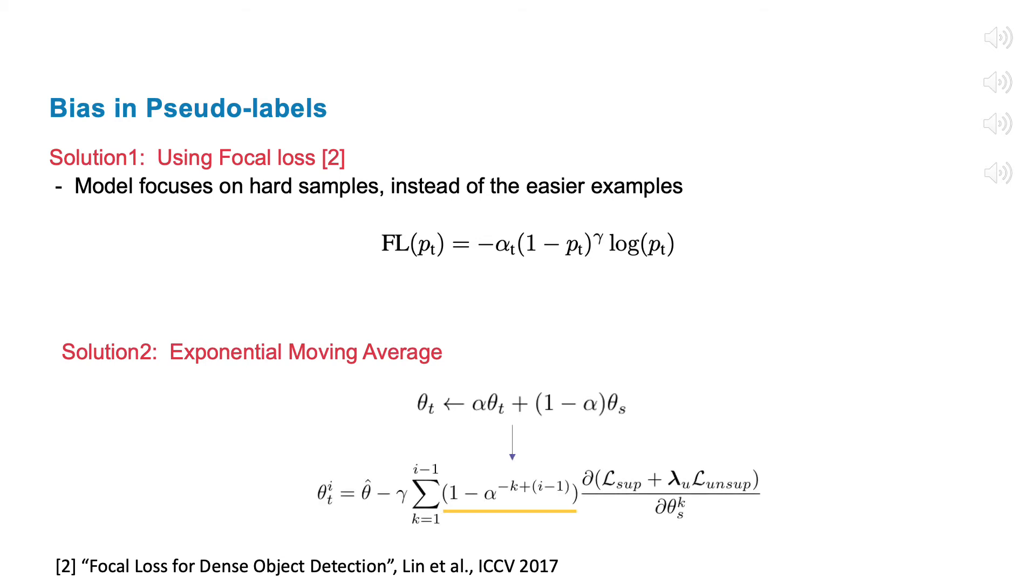To be more specific, the reuse of previous teacher model is equivalent to putting an additional small coefficient on the gradient. With slowly changing decision boundary, the pseudo-labels of unlabeled data are least likely to change dramatically, and this prevents the decision boundary from moving toward minority classes.